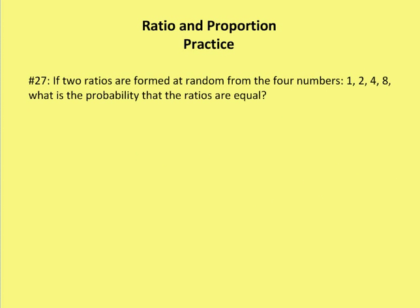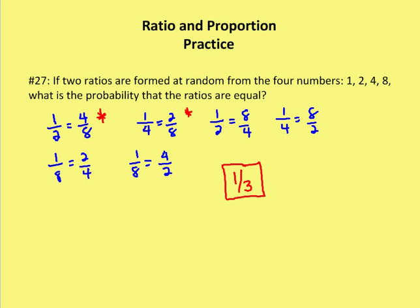Last problem. If two ratios are formed at random from the four numbers 1, 2, 4, 8, what is the probability that the ratios are equal? So let's establish ratios for all four of those numbers. And let's see what we get.